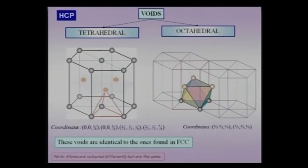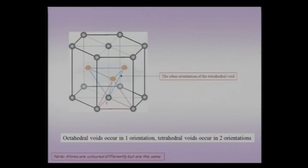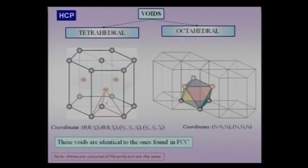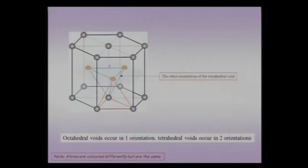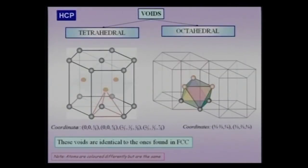The tetrahedral void is easier to visualize. There are two equivalent tetrahedral void positions, but their orientations differ: one tetrahedron is oriented upwards and the other is oriented downwards. The downward tetrahedron is formed by three atoms in the mid-plane and an atom shared between three unit cells. The octahedron has a single orientation in the hexagonal close-packed crystal, while the tetrahedron has two orientations. The voids are identical to those found in the cubic close-packed crystal — there is no difference between the voids themselves.